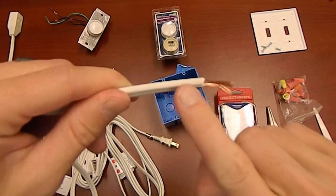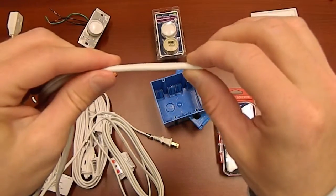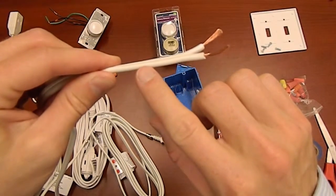Now you'll notice here one of the wires has ribbing. This is the neutral wire. The other wire is smooth. This is the hot side.